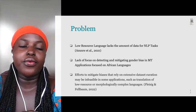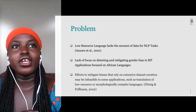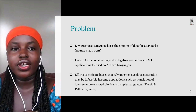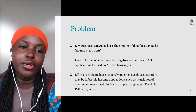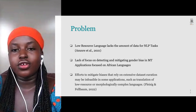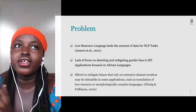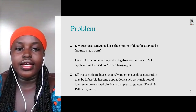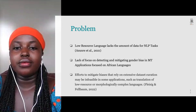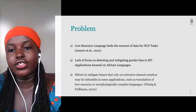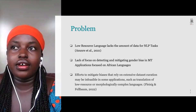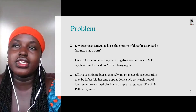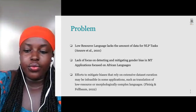Going back to the problem — for the data team, some suggested that low resource amounts of data might be the issue. I also found a lack of focus on detecting and mitigating data bias in machine translation systems for African languages like Kaya AI. Efforts to mitigate biases have largely relied on large datasets. I also recently discovered a paper from Uganda on detecting gender bias in the Luganda dataset, which was promising.